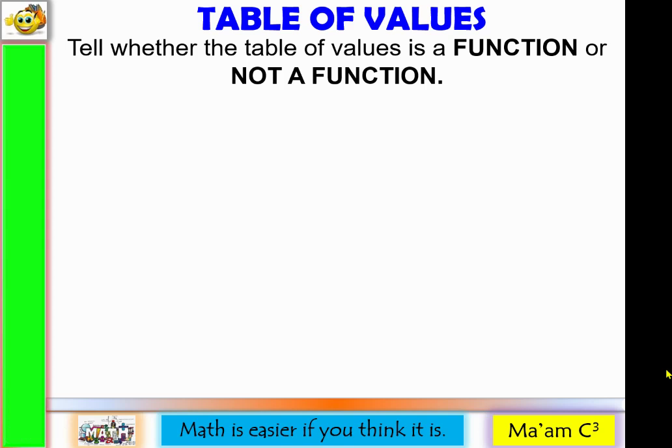Determining whether the xy table of values is a function or not a function. Just like in ordered pairs, the easiest way to know if a table of values is a function is by examining all the elements of x. If all elements of x are unique, then the relation is a function.